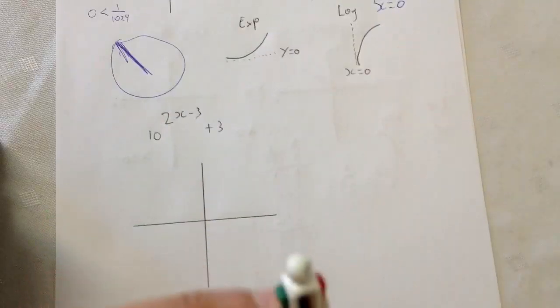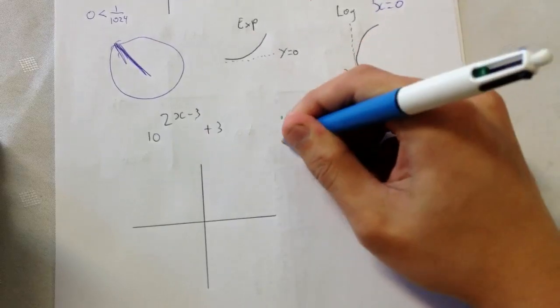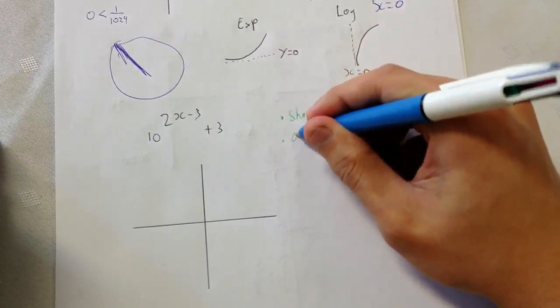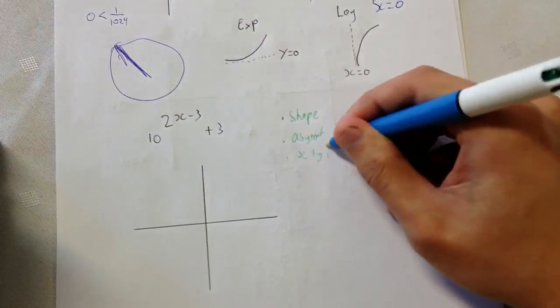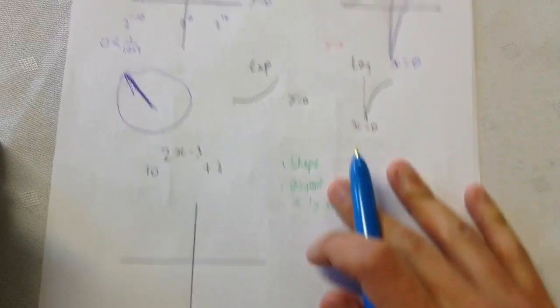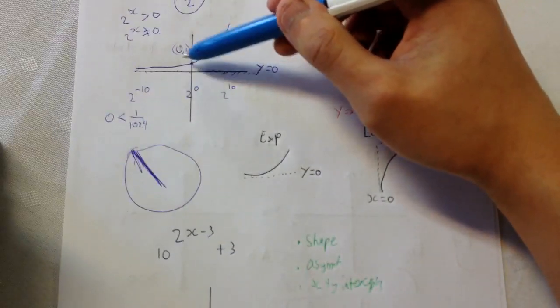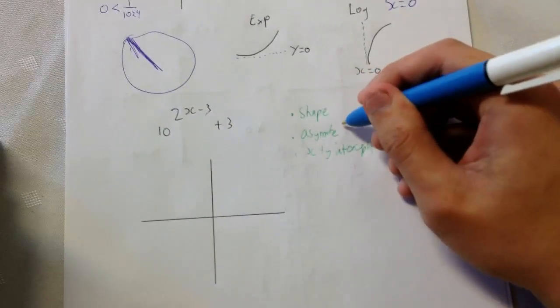Then we need to consider three things. I want to know the shape. I want to know where the asymptote is. Maybe where the x plus y intercepts are. And you can consider them in any order you like. But this is kind of what I'm going to need to draw. Because we're going to have to put this in. We're going to have to put the asymptote in. And we're going to have to have the shape. So these are the three things you need to consider for any graph. This is like special.